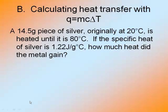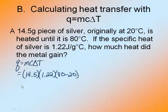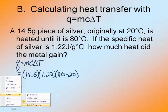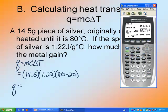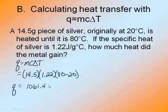Last one. A 14.5 gram piece of silver originally at 20 degrees Celsius is heated until it is 80 degrees Celsius. If the specific heat of silver is 1.22 joules per gram degree Celsius, how much heat did the metal gain? This one's a lot easier. This is just a straight-up, no transfer, no water, nothing. Q equals mc delta T. My metal is 14.5 grams, its specific heat is 1.22, and its temperature change is 80 minus 20. So the heat that it must have gained would be 14.5 times 1.22 times 60, which is the difference of 80 minus 20, is 1,061.4 joules.